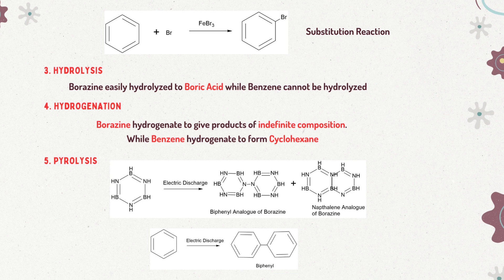When we consider hydrolysis, borazine can readily undergo hydrolysis to produce boric acid, whereas benzene is resistant to hydrolysis. Moving to hydrogenation reactions, when borazine is hydrogenated, it forms products with indefinite compositions, unlike benzene, which yields cyclohexane upon hydrogenation. Moreover, in pyrolysis reactions, borazine leads to the creation of compounds analogous to biphenyl and naphthalene, while benzene's pyrolysis results in the formation of biphenyl.